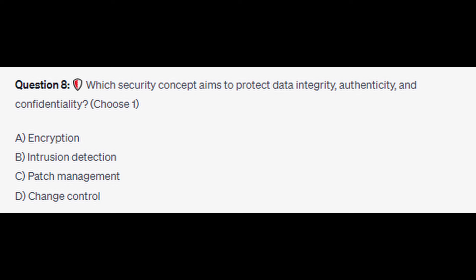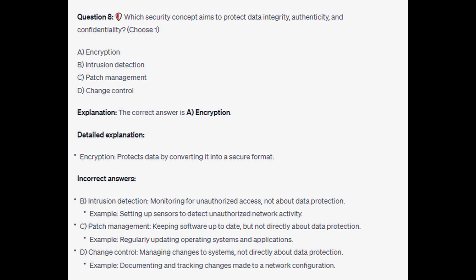Question number eight: which security concept aims to protect data integrity, authenticity, and confidentiality? Choose one. Is it A: encryption, is it B: intrusion detection, is it C: patch management, or is it D: change control? The correct answer is A: encryption. Encryption protects data by converting it into a secure format. For the incorrect answers: intrusion detection monitors for unauthorized access — an example would be setting up sensors to detect unauthorized network activity. Patch management keeps software up to date — an example would be regularly updating the operating system and applications. Change control manages changes to systems — an example would be documenting and tracking changes made to a network configuration.